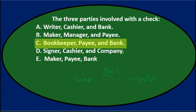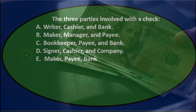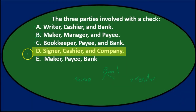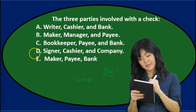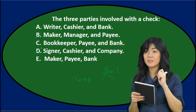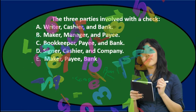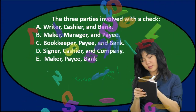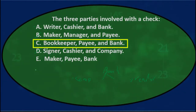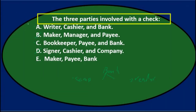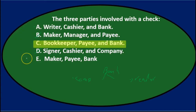C says bookkeeper, payee, and bank — possible, but I'm not sure if the terminology is right, so I'll keep that for now. A says writer, cashier, and bank — that seems repetitive with writer and cashier, and we don't see the vendor. E says maker, payee, and bank — from a broad standpoint that sounds pretty good, because we've got the person making the check, the payee, and the bank, which represents our three areas. So I'm left with A, C, and E: writer/cashier/bank, bookkeeper/payee/bank, and maker/payee/bank.